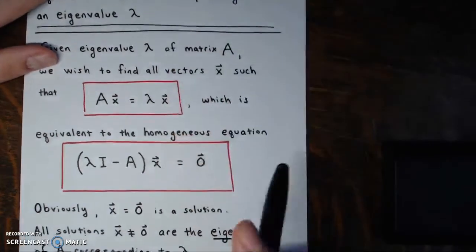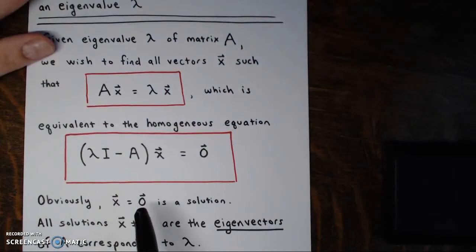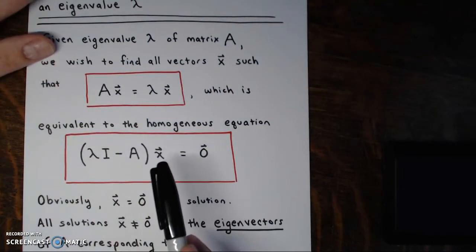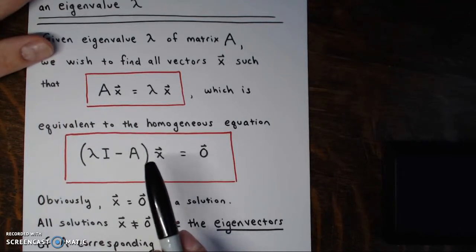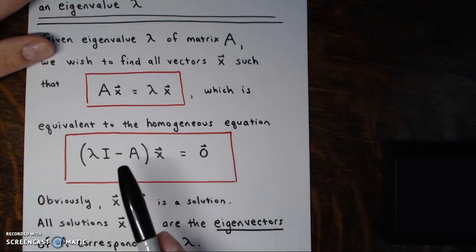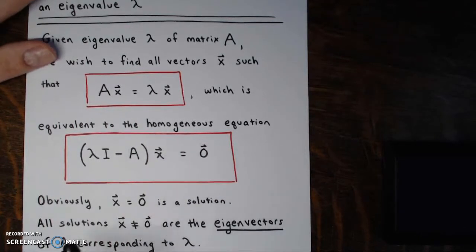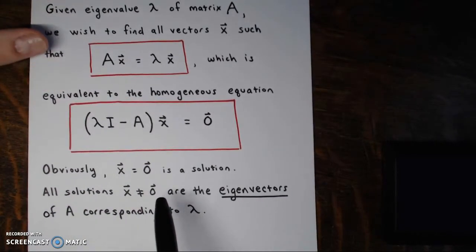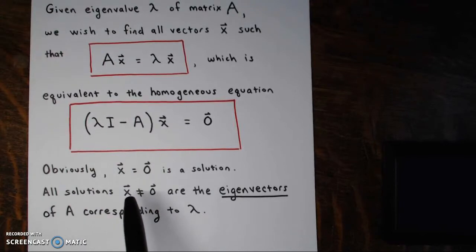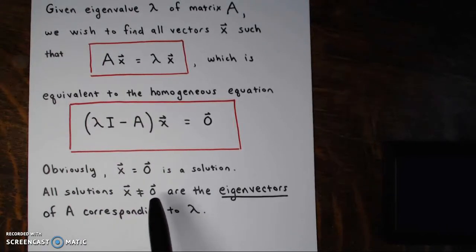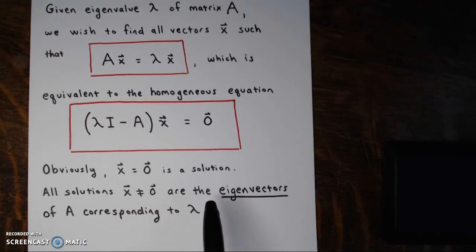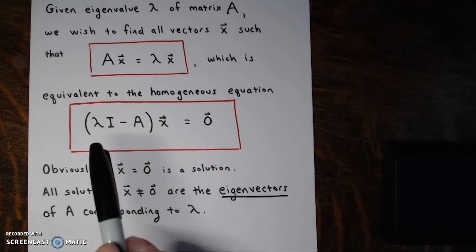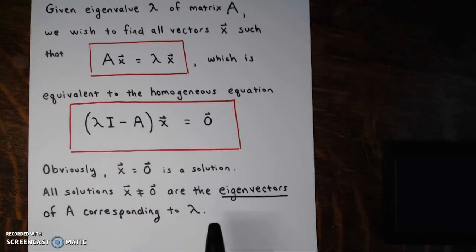The zero vector itself is a solution — that would be a trivial solution. If we replace x with the zero vector, clearly this would be true, because any matrix times the zero vector gives the zero vector. So we're looking for non-zero solutions. All vectors x that are not the zero vector are called the eigenvectors of matrix A corresponding to this particular eigenvalue lambda.